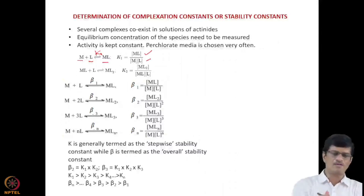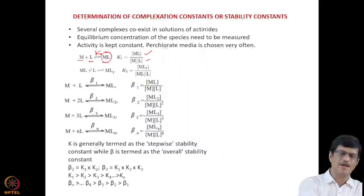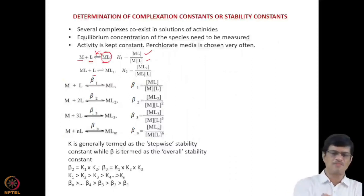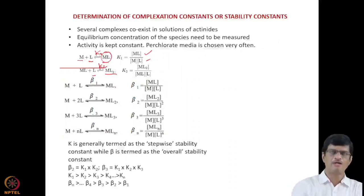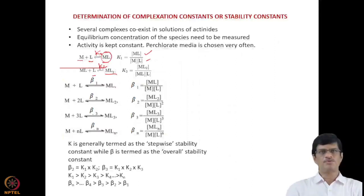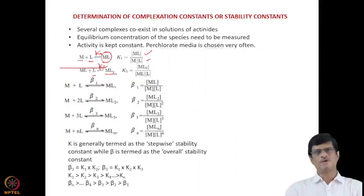If the complex ML reacts with another ligand L, it forms ML₂, and the equilibrium constant for this step is termed K2, defined as the concentration of ML₂ divided by the product of the concentration of ML and the ligand concentration. Similarly, for the nth complex of the metal ion, the formation constant is Kn. These are termed stepwise stability constants or stepwise formation constants, as complexation takes place one step at a time — first ML, then ML₂, then ML₃, and so on.